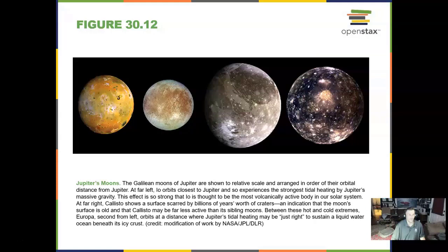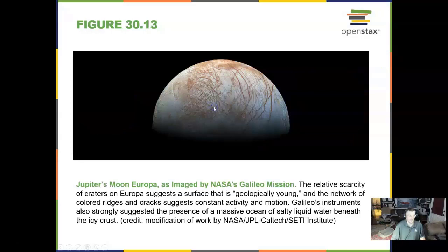We think there could be some life forms associated with some of Jupiter's large moons, especially Europa, with the ice crust in the saltwater ocean. And here that is again — Europa, as seen by the Galileo spacecraft in the Jupiter area.